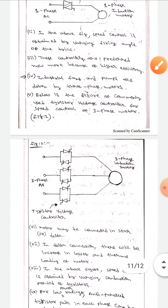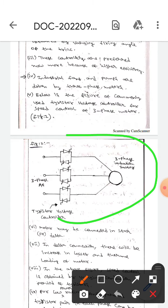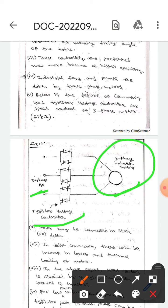Here is the diagram showing the commonly used thyristor voltage controller for speed control of three phase motor. This is the three phase induction motor, this is the three phase AC, and this is the triac voltage controller.